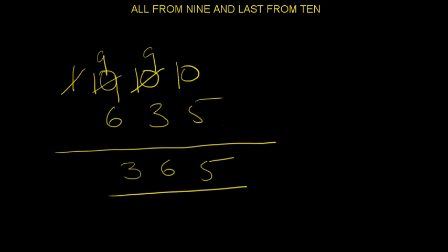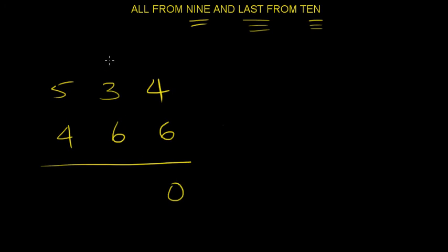However, in Vedic Math, it's very easy. All from 9 and last from 10. Let's do some more numbers. Let's just say 534. Now instantly you think, all from 9 and last from 10. So all from 9. So 9 and 5 gives you 4, 6, 4, 66. Now let's see, does that add up to 1,000? 0 and carry 1, 0 carry 1, 0. Voila! You get 1,000.